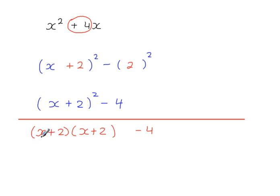So expanding the brackets, these two multiply to give x squared. And then these two multiply to give you 2x. And these two here multiply to give you 2x. And these two here multiply to give 4.